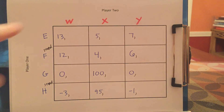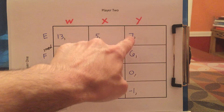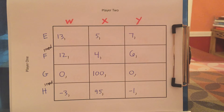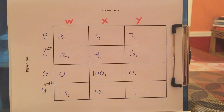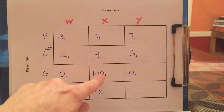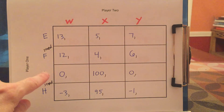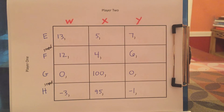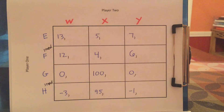Let's see why F is stupid. If W is played, F gives a lower payoff than E. If X is played, F gives a lower payoff than E. And if Y is played, F gives a lower payoff than E. So you never want to play F because no matter what player two does, you'd always be better off with E than with F. That doesn't mean you want to play E — if X is played, you definitely don't want to play E. But you never want to play F. Now let's see why H is stupid. If W is played, everything beats H. If X is played, G beats H. And if Y is played, everything beats H. H is stupid because G always beats it, so you'd always be better off with G.